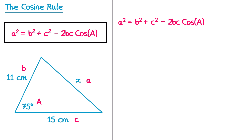Now it doesn't actually matter which way round you put these — I'm going to say that the 11 is the b and the 15 is the c. Now that you've labelled the triangle we can take the formula and start substituting all of the information from the question. So we're going to start with a squared — and we know that a is x, so that's x squared — and this equals b squared, so that's 11 squared, plus c squared, so that's 15 squared, and then it's minus two lots of b, which is 11, times c, which is 15, and then also multiplied by cos of capital A, so that's the angle 75 degrees, so multiplied by cos of 75.